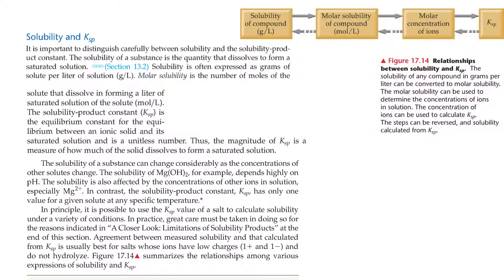The solubility of a substance can change considerably as the concentrations of other solutes change. The solubility of magnesium hydroxide, for example, depends highly on pH, and is also affected by the concentrations of other ions in solution, especially magnesium ion. In contrast, the solubility product constant, K-sub-sp, has only one value for a given solute at any specific temperature. In principle, it is possible to use K-sub-sp to calculate solubility under a variety of conditions, though great care must be taken, as discussed in the section on limitations of solubility products.